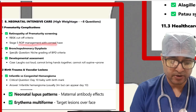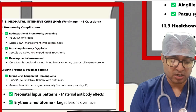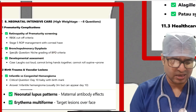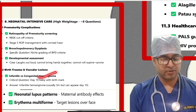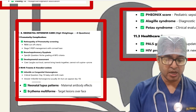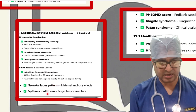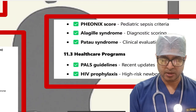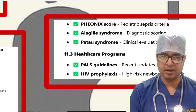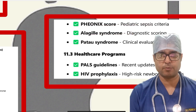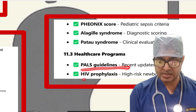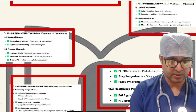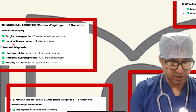For neonatal intensive care, questions covered ROP screening, RBSK cutoff criteria, stage 5 ROP management, bronchopulmonary dysplasia grading, developmental assessment with clinical scenarios, infantile versus congenital hemangioma, neonatal lupus pattern, erythema multiforme with target lesion on face. Some scores asked included the Phoenix score. Alagille syndrome is a very favorite topic of examiners, along with Alagille syndrome pulse guidelines and HIV profile.